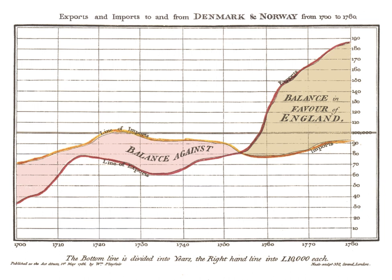Statistical graphics have been central to the development of science and date to the earliest attempts to analyze data. Many familiar forms, including bivariate plots, statistical maps, bar charts, and coordinate paper were used in the 18th century.